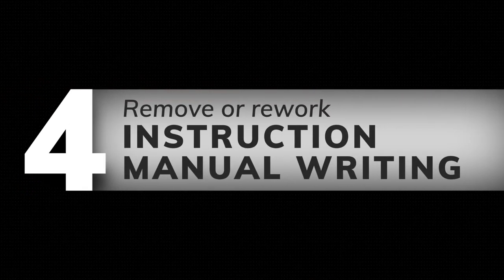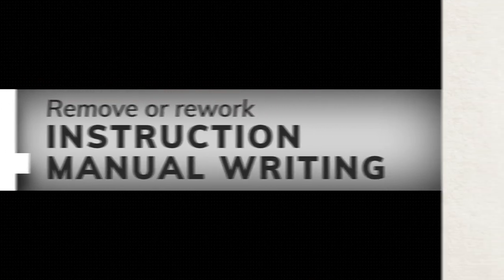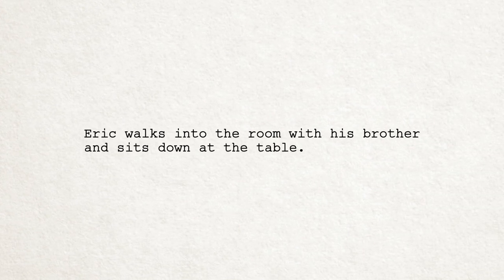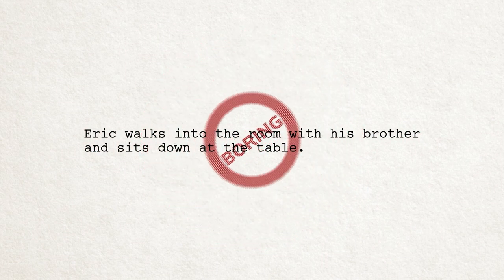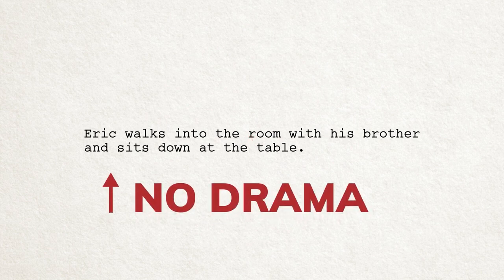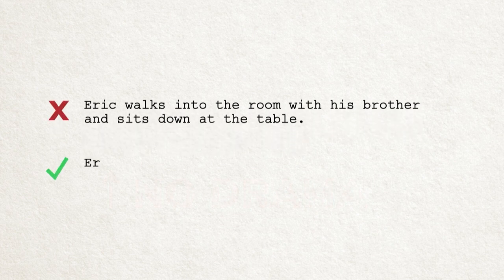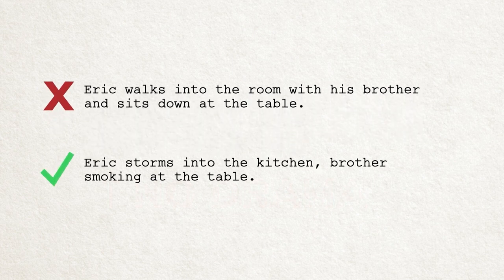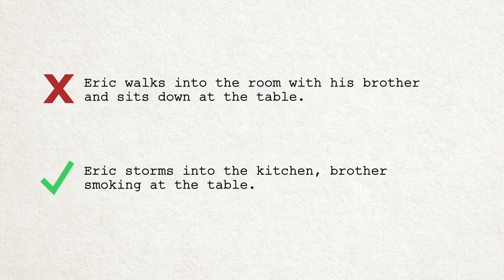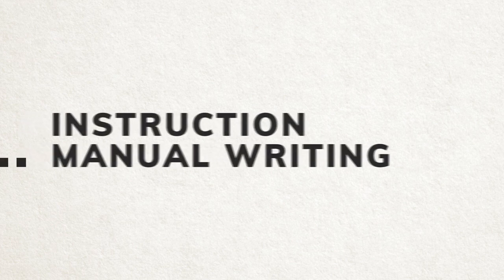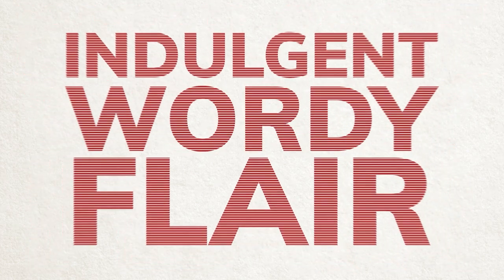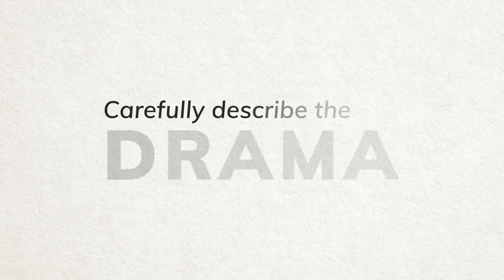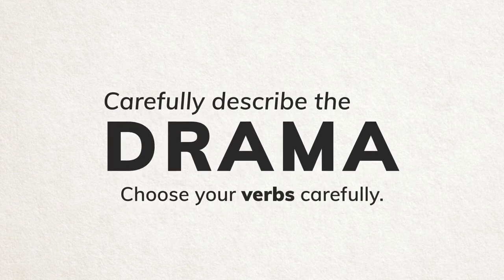Number four: remove or rework any clerical or instruction manual writing. For example: 'Eric walks into the room with his brother and sits down at the table.' This is not cinematic — it's a boring sentence for a boring shot. The reader doesn't see a moment of drama; they see characters going through the motions. Instead, you could write: 'Eric storms into the kitchen, brother smoking at the table.' Get away from basic blueprint style writing — this is your time to shine. The more you get away from writing like an instruction manual, the more your voice comes out. Choose your verbs carefully.